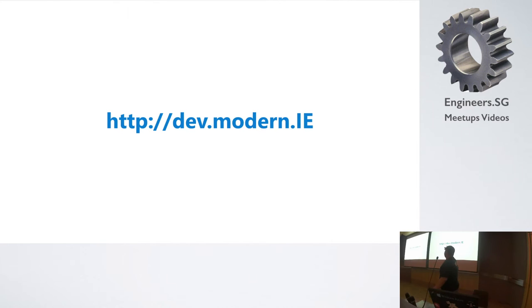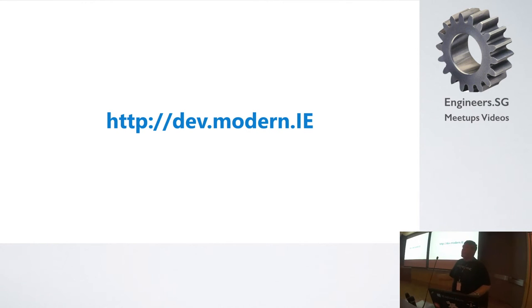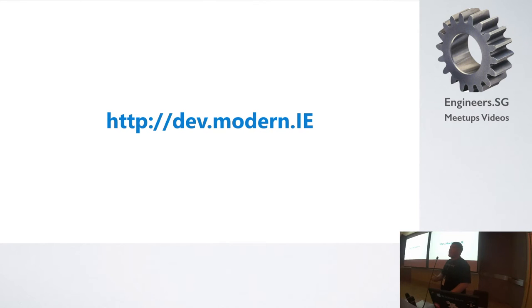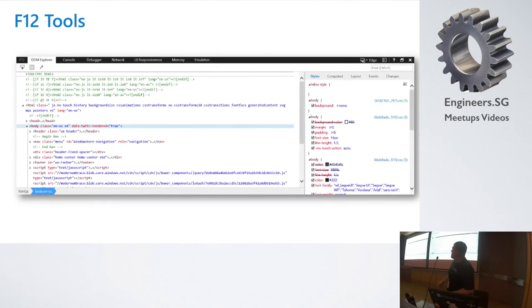You can go to dev.modern.ie to read everything about that. The current release I use is Windows 10 build 10166, which is already ready for web development. You can download and use it to test Edge, including the F12 dev tools as usual.